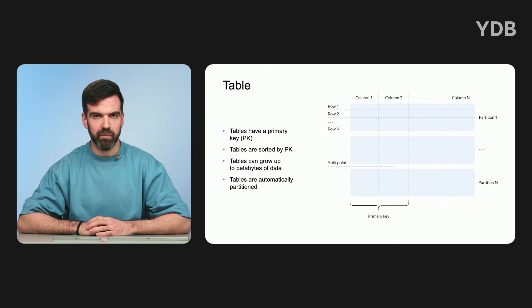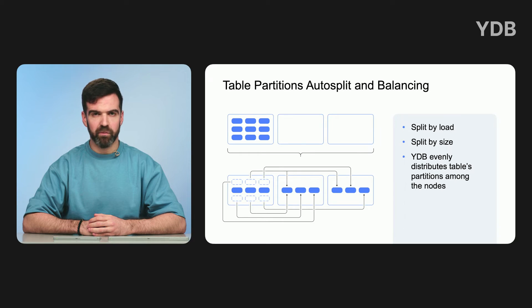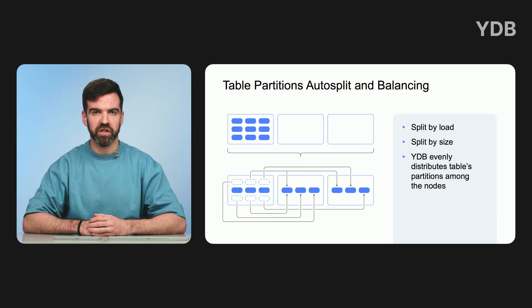A database table can be partitioned by primary key value ranges. Each partition is responsible for a specific range of primary keys, and key ranges maintained by different partitions do not overlap. In cases where there is not a lot of data or loads are small, the table may consist of a single partition. As the amount of data or load on a partition grows, YDB automatically splits it in two. The data is split by the median value of the primary key if the partition size exceeds the threshold. If partitioning by load is used, the partition collects a sample of requested keys and, based on this sample, selects a key for partitioning to evenly distribute the load across new partitions.